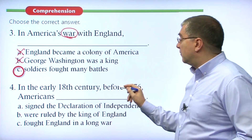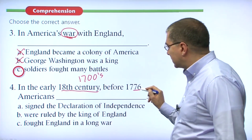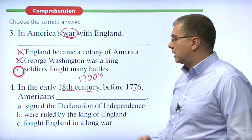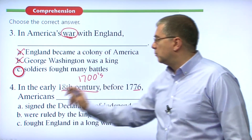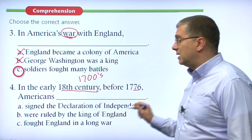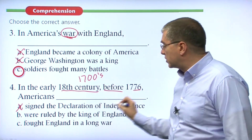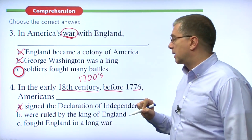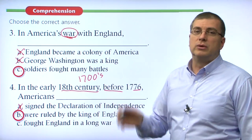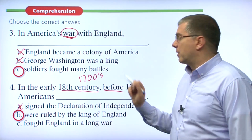Number four: In the early 18th century, before 1776 — remember, the 18th century means the 1700s, and 1776 is late, not early. Before 1776, Americans — A. Signed the Declaration of Independence? No, that was in 1776, not before. B. Were ruled by the King of England? Yes, that's true — in the early 1700s, America was ruled by the King of England. C. Fought England in a long war? No, there was no long war before that. The answer is B.